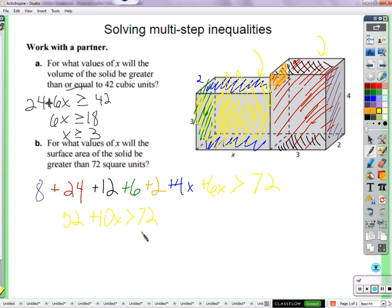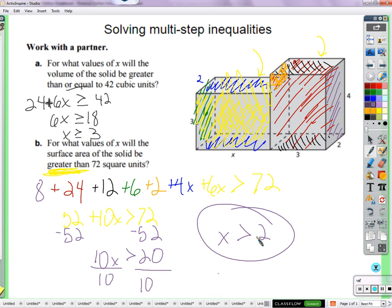Then you minus fifty-two. Does it say greater than or equal to? It just says greater than. So minus fifty-two, then that equals twenty. Ten x needs to be greater than twenty. Then you divide by ten, then you get two. X is greater than two.